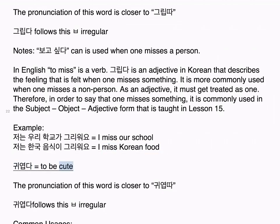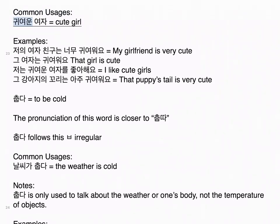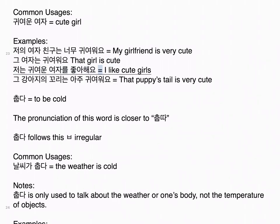귀엽다 means to be cute. The pronunciation is closer to 귀엽다. 귀엽다 follows the 비읍 irregular. Common usages: 귀여운 여자 means cute girl. Examples: 저의 여자친구는 너무 귀여워요. My girlfriend is very cute. 그 여자는 귀여워요. That girl is cute. 저는 귀여운 여자를 좋아해요. I like cute girls. 그 강아지의 꼬리는 아주 귀여워요. That puppy's tail is very cute.